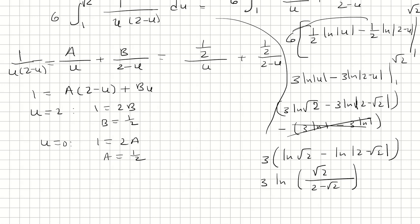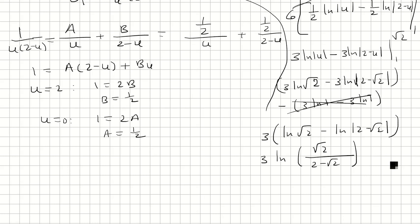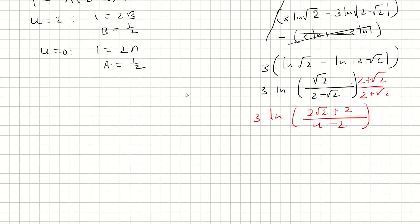And at this point you can leave it like this or you can simplify. So you can multiply the inside by 2 plus root 2 if you wanted. So this would be 3 ln, and the bottom is 4 minus 2, and the top is 2 root 2 plus 2. So we have 3 ln, and then the bottom is 2, the top is 2 root 2 plus 2. Divide everything by 2, we have root 2 plus 1. And so this is the final answer.